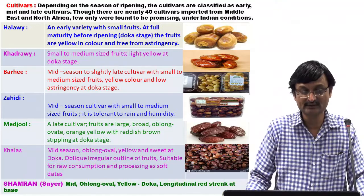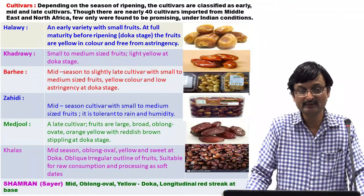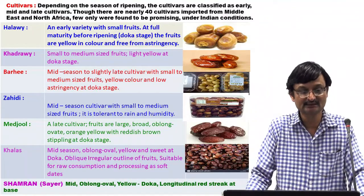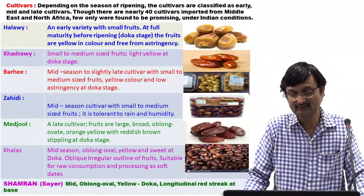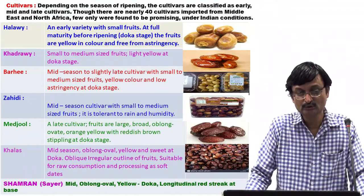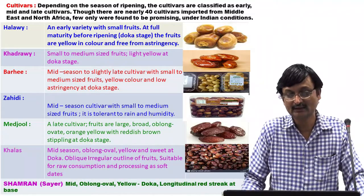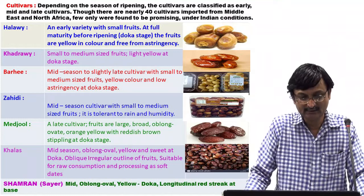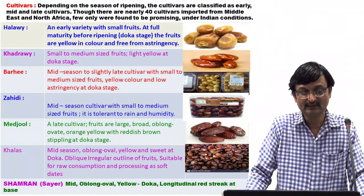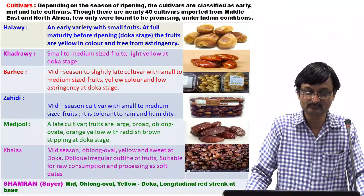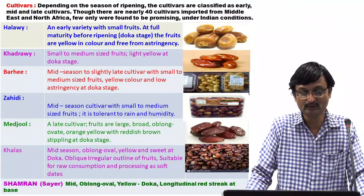Important cultivars of dates: Depending on the season of ripening, the cultivars are classified as early, mid and late. Though there are nearly 40 cultivars imported from the Middle East and North Africa, only a few are found to be promising under Indian conditions. 1. Halawi — an early variety with small fruits that reach full maturity before ripening at the Doka stage. The fruits are yellow in color and free from astringency.